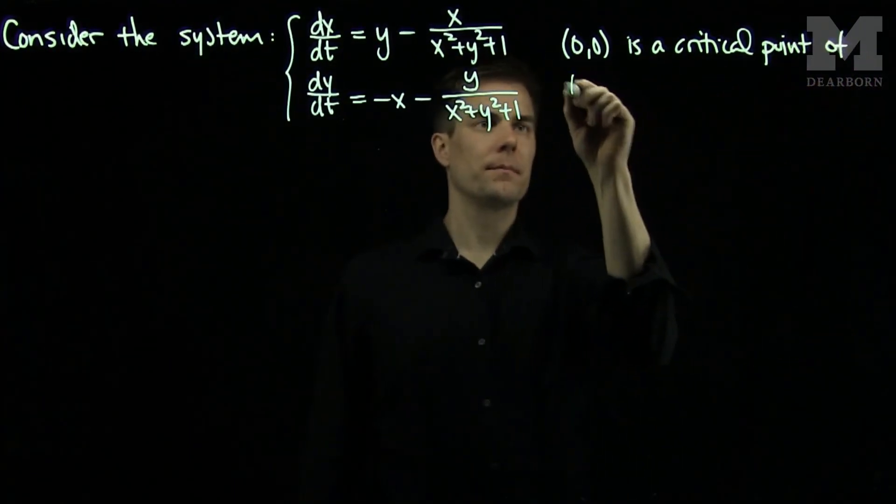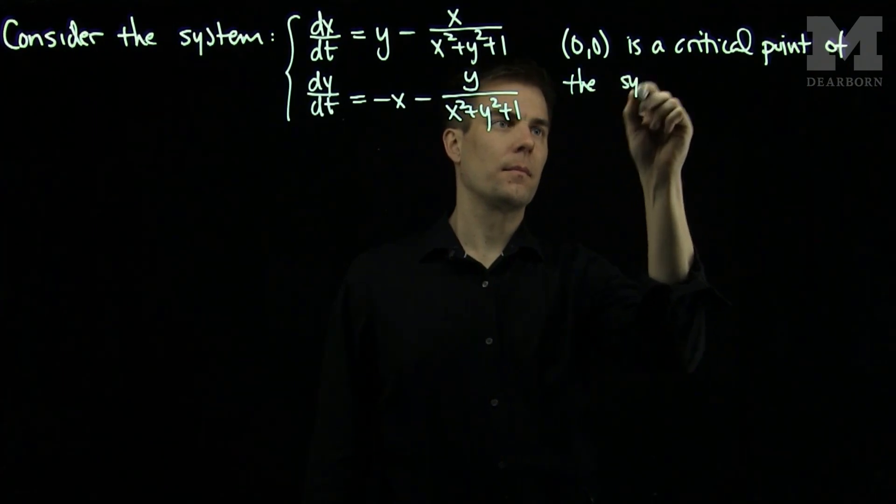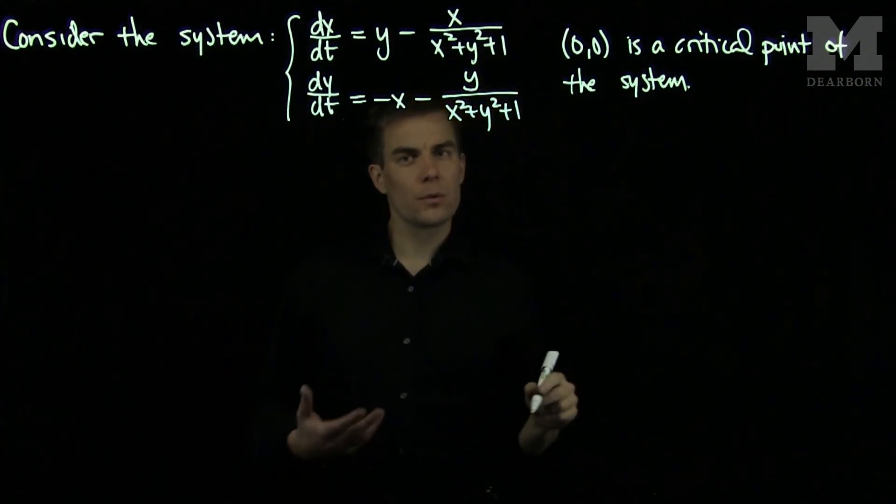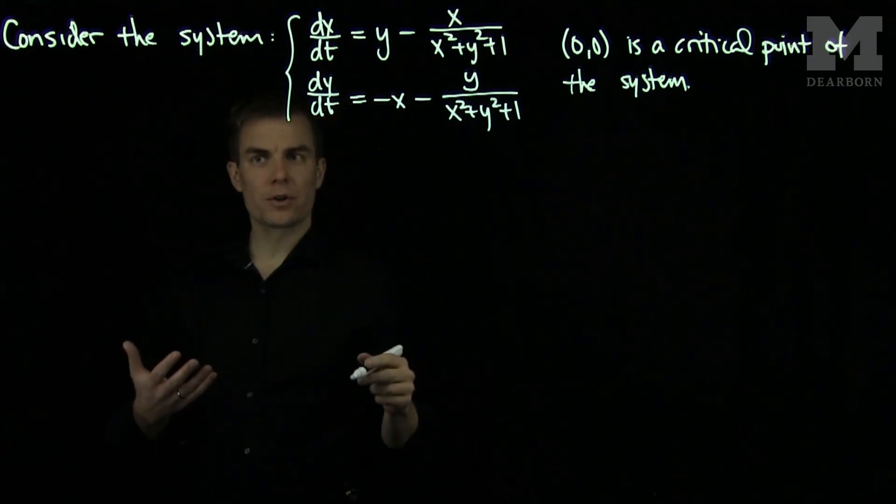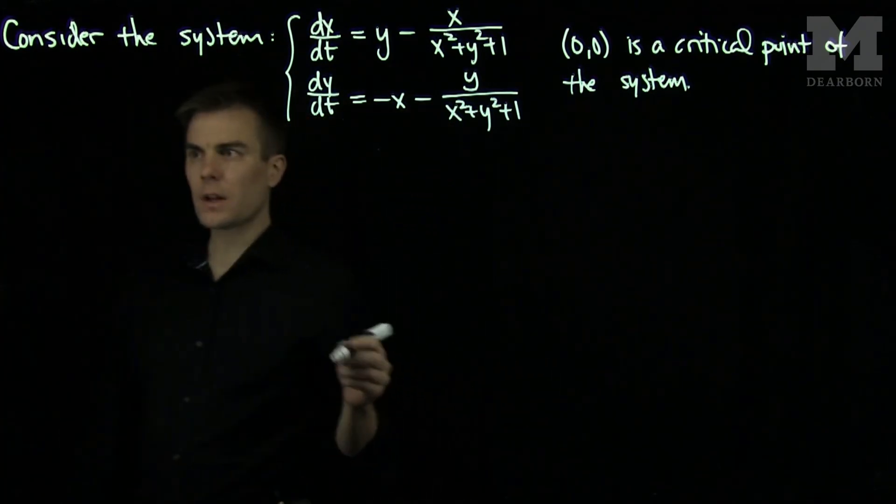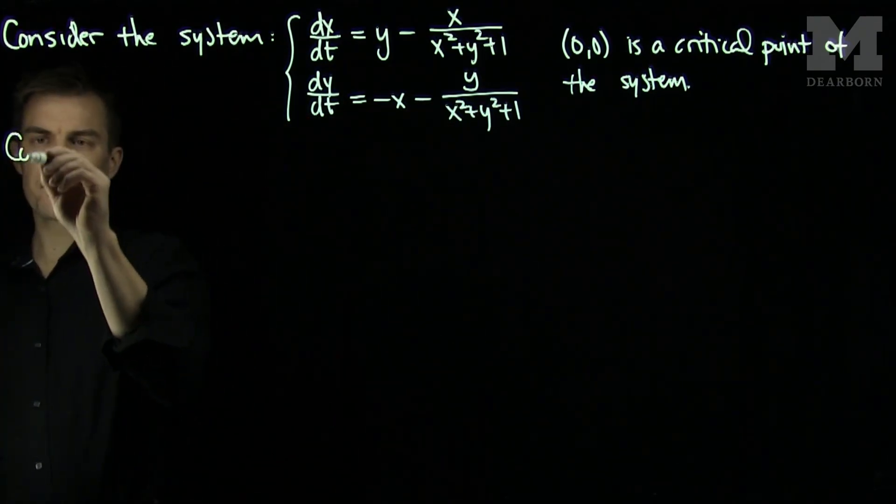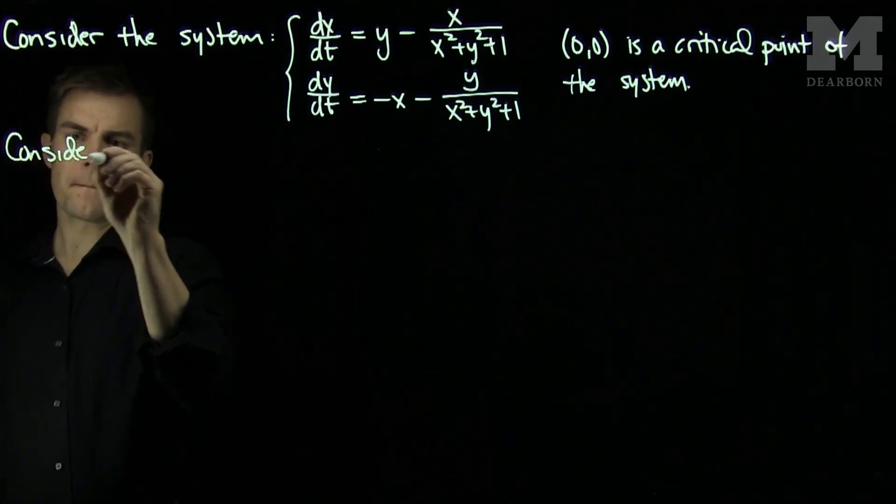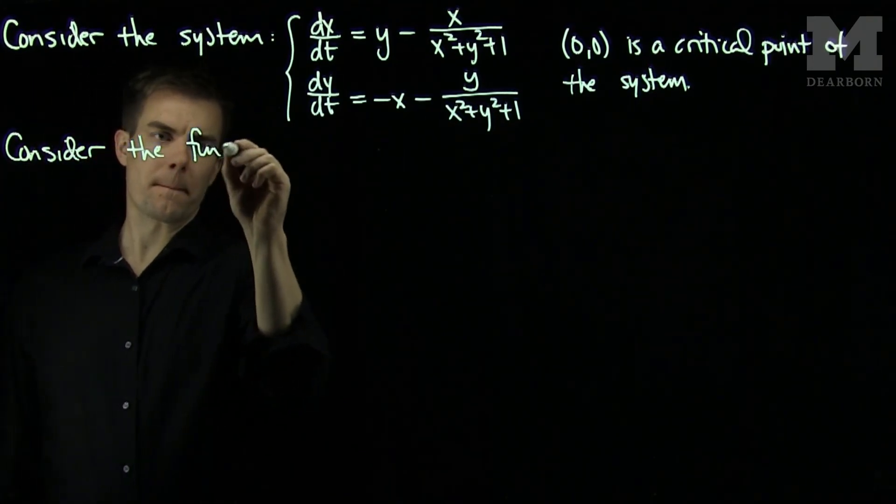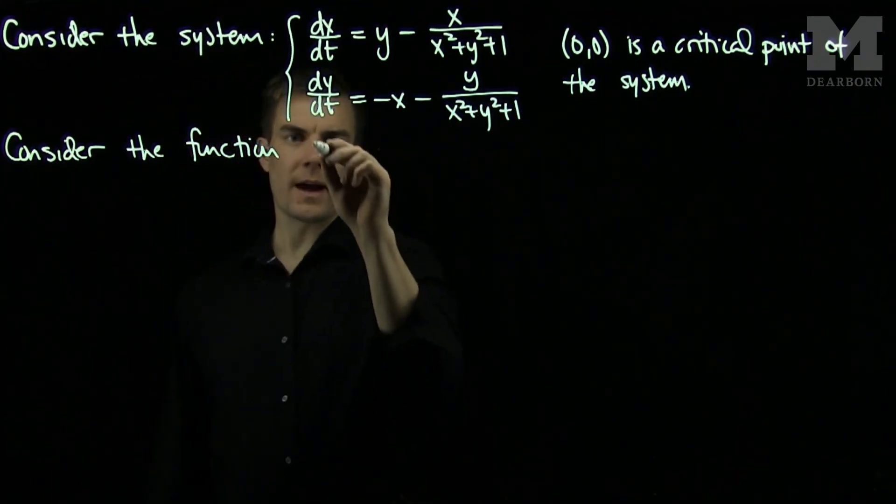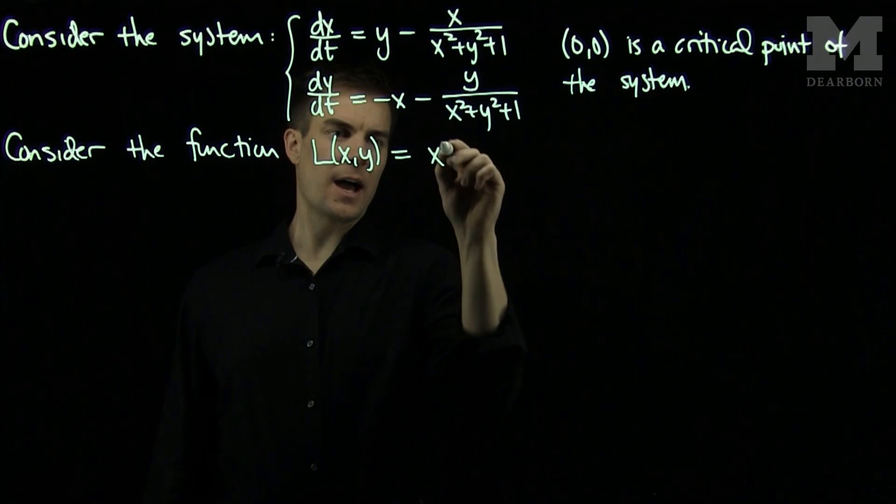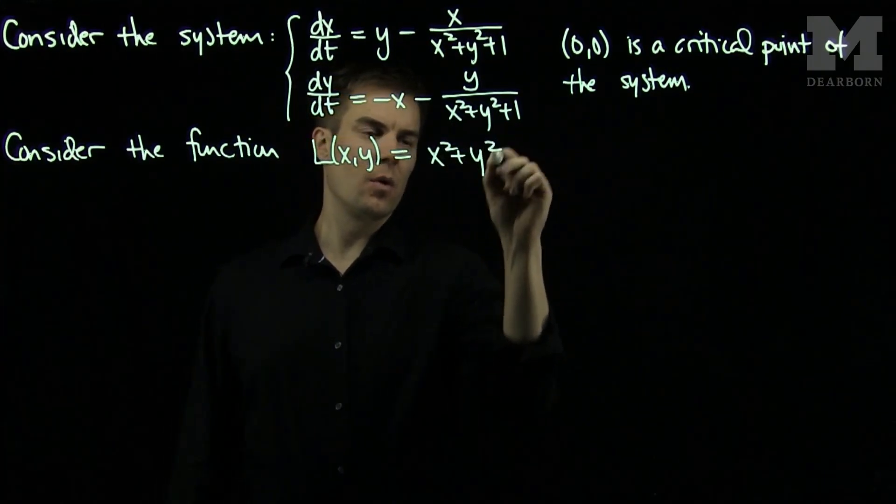of the system. What I will do now is I will construct a function on which the trajectories of this system are decreasing. So let's consider the function L(x,y), which is x² + y².